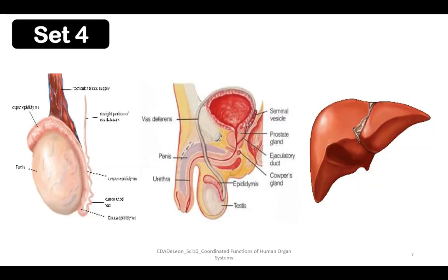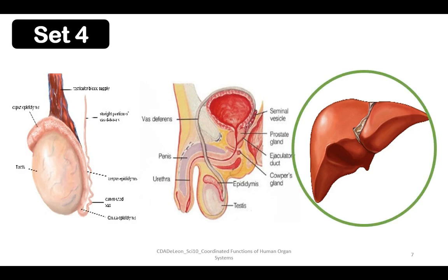Set number four: we have the testes, the male reproductive system as a whole, and liver. Which does not belong to the group? The answer is liver, because it is part of the digestive system.